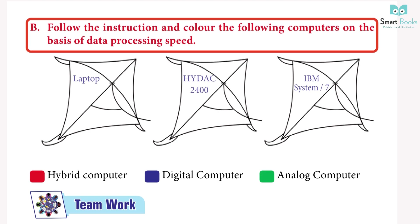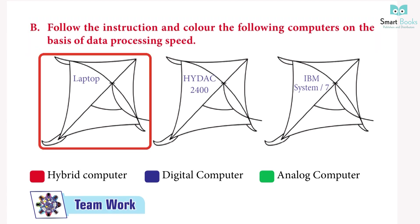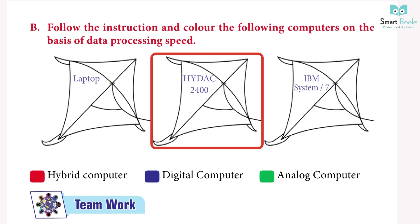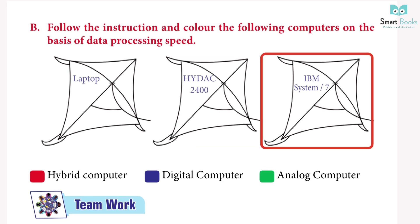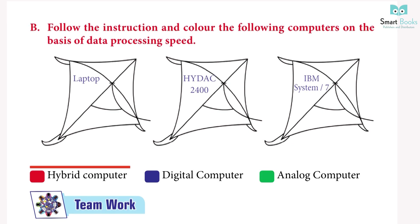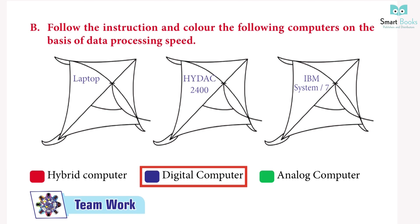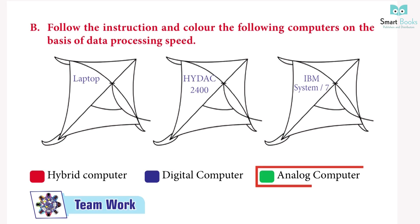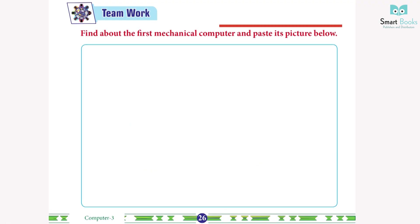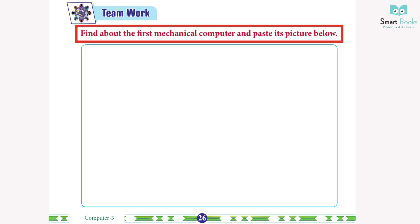Exercise B — Color the following computers on the basis of data processing speed: Laptop and HiTec 2400 — hybrid computer (blue); IBM System/7 — analog computer (red); digital computers (green). Answer: do it yourself. Team work: find out about the first mechanical computer and paste its picture below.